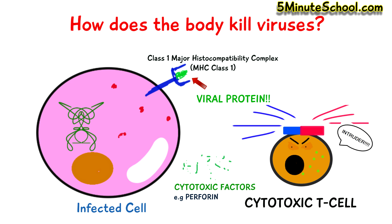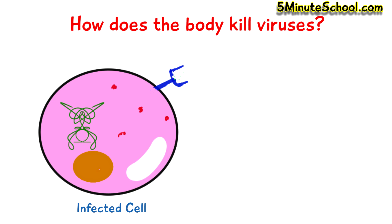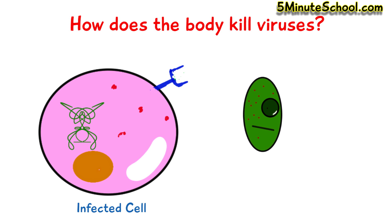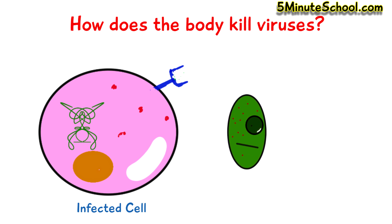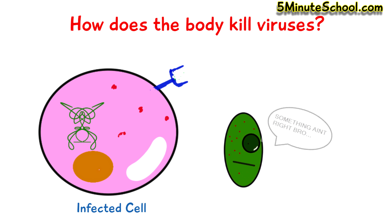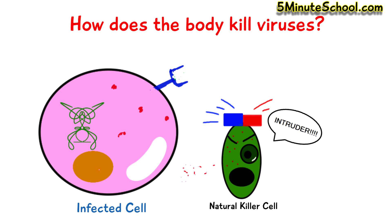These granules also contain an enzyme called granzymes, which enter the cell via the holes made by perforin and initiate a process called apoptosis, which is like cell self-destruction. Some viruses are adapted to hiding from T cells by stopping MHC receptors from presenting any proteins, so T cells don't detect the infection. In this scenario, a natural killer cell recognizes that the cell isn't displaying as many MHC receptors as it should, and releases toxic substances to kill the cell.